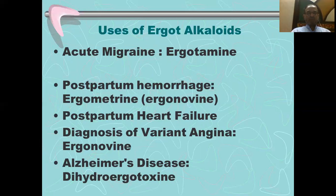The first objective: uses of ergot alkaloids. Acute migraine — we have covered this in detail in the lecture on migraine. They are used for acute migraine, not for prophylaxis. They are considered second line after the triptans because of several advantages of the triptans over ergotamine, including faster relief, higher bioavailability, less adverse effects like vasoconstriction, and less concomitant nausea.